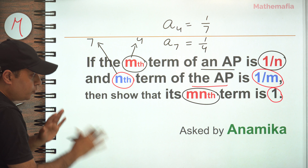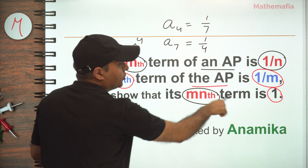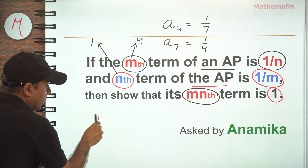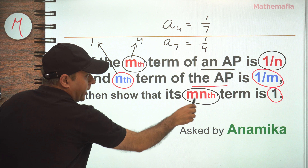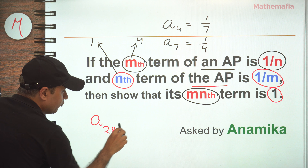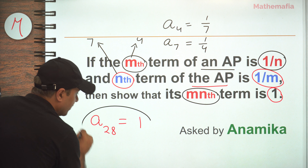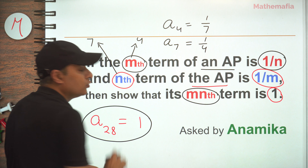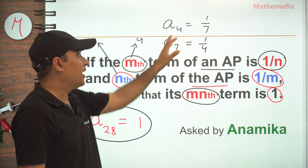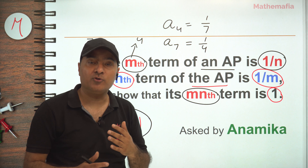So if this is true, then we are asked to prove that its mn-th term is 1. The mn-th term means a₄ₓ₇, which is a₂₈, is equal to 1. This is what we have to prove — but we are not going to take specific values like m=4 and n=7; we have to prove it in a generic way.